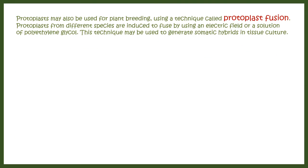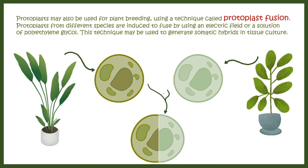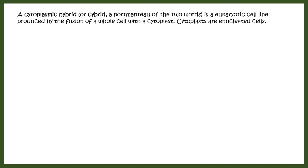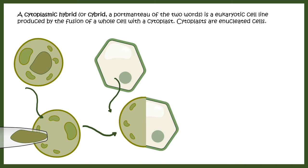Protoplast fusion is used to overcome species barriers — for example, tomato and potato are different species that cannot reproduce with each other. Protoplasts from each plant can be fused using polyethylene glycol treatment, producing fused cell types called somatic hybrids. One application is cybrids (cytoplasmic hybrids), where one cell is enucleated and the two cells are fused, so the nucleus comes from one cell while cytoplasmic components are mixed, ultimately giving rise to cybrid seedlings.